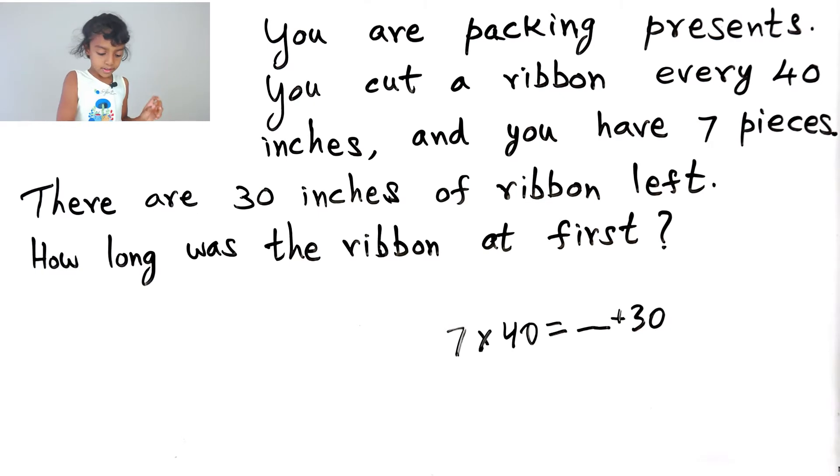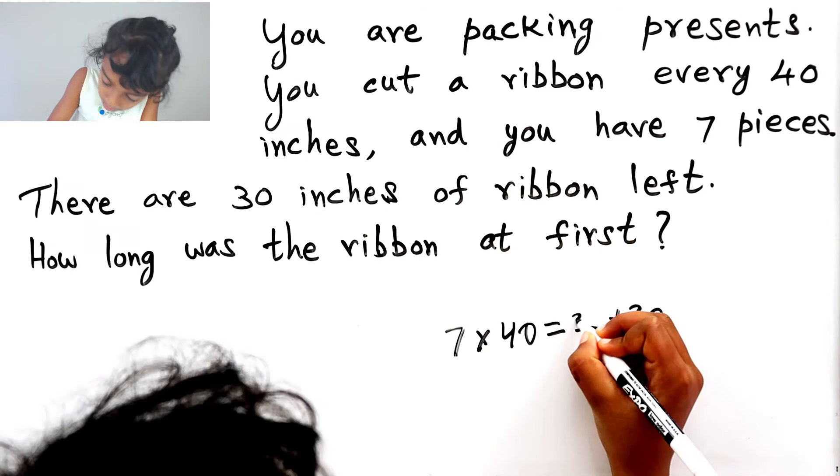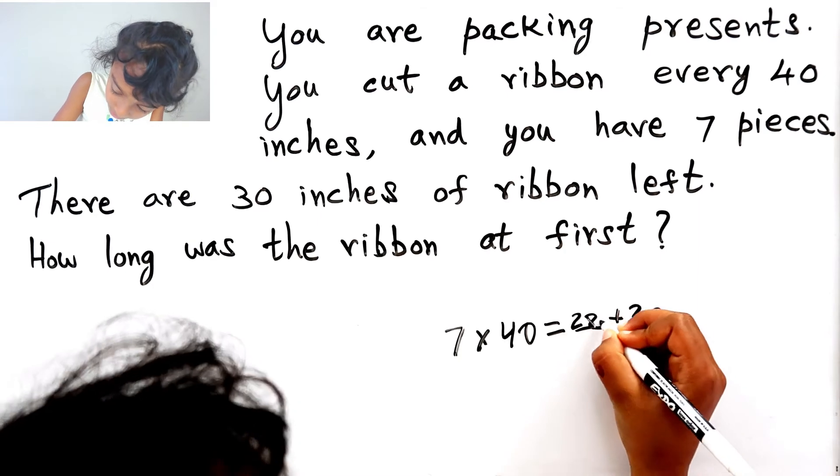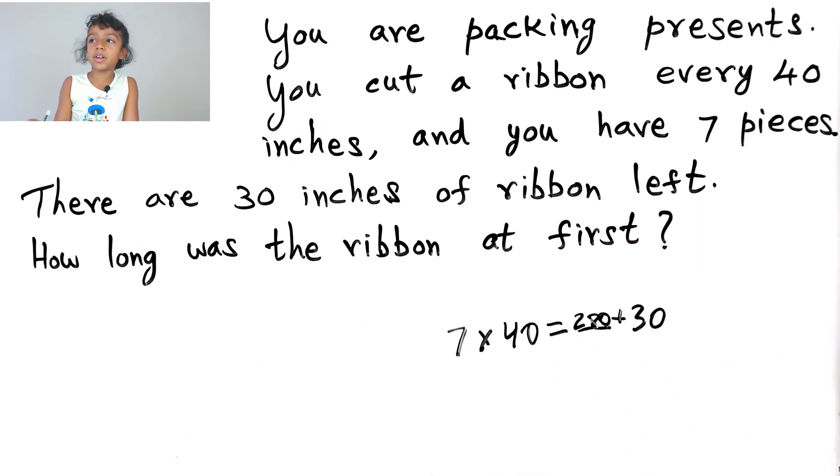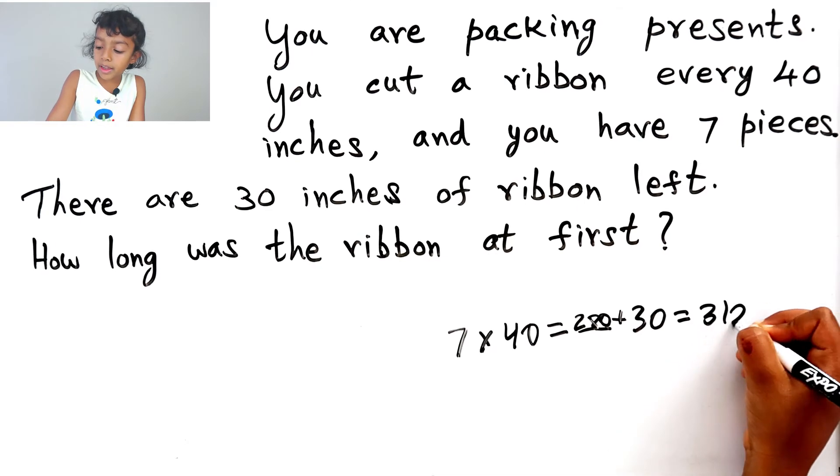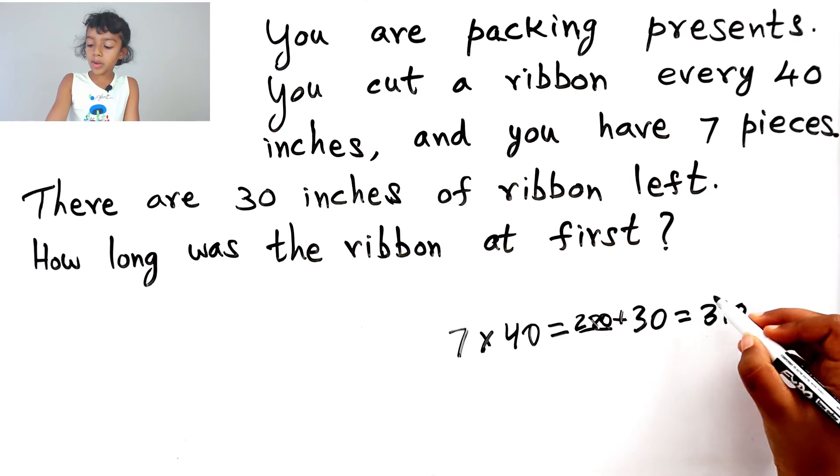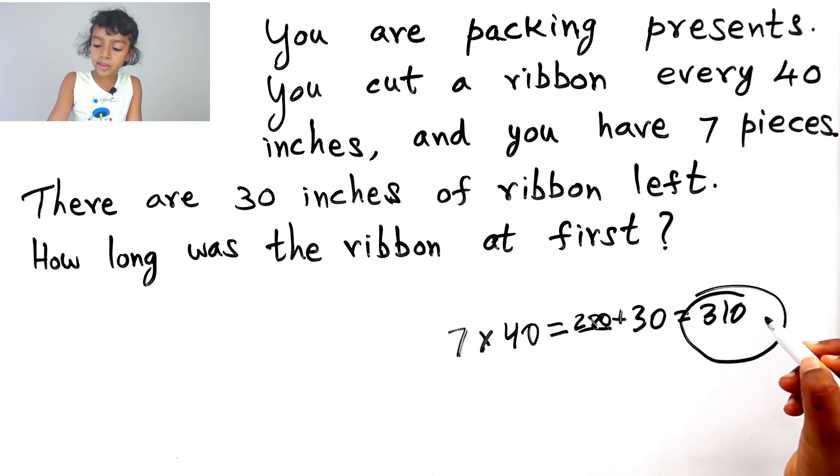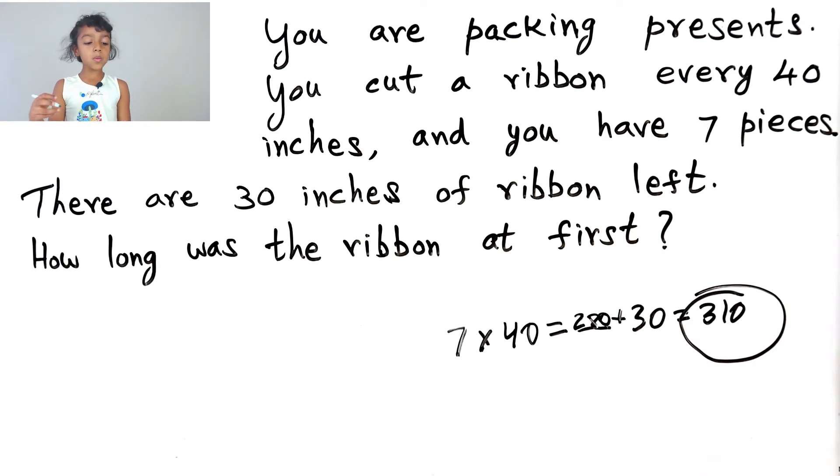280, plus 30, that equals 310. So, 310 is done. So, the ribbon was 310 inches at first.